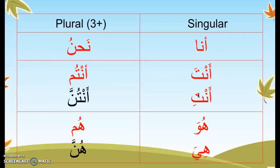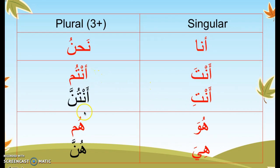Here's a chart — your book has one too, but this one is a bit clearer. On the right is the singular for one person, and on the left is plural for three or more. First person: أنا — I, نحن — we. Second person: أنت / أنتِ — you, and the plural أنتم and أنتن — right now we'll focus on أنتم. Third person: هو, هي — he and she, and هم / هن — they. We'll focus on هم.